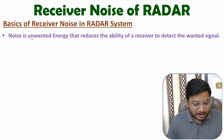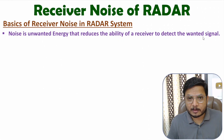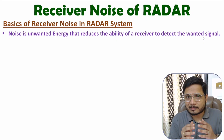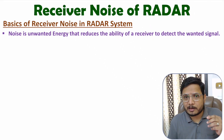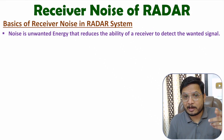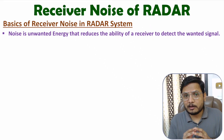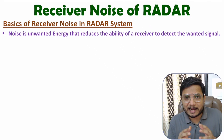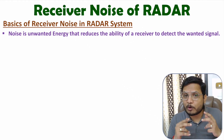Noise is unwanted energy that reduces the ability of the receiver to detect the wanted signal. In a radar system, the receiver is receiving a very weak signal from the antenna. The received signal is the echo signal from the target, and the strength of that echo signal at the antenna is in the range of 10 to the power minus 12 watts to 10 to the power minus 15 watts. So here we are receiving a very weak signal, and with that weak signal, if noise is added, then it becomes a very complicated task for the receiver to identify the wanted signal.